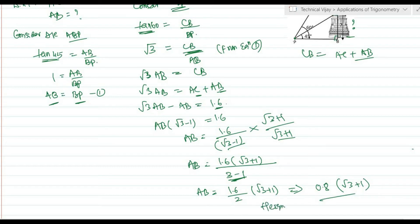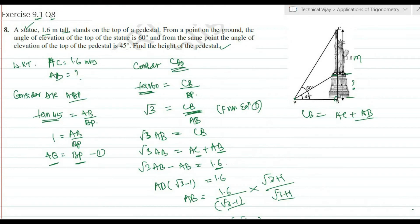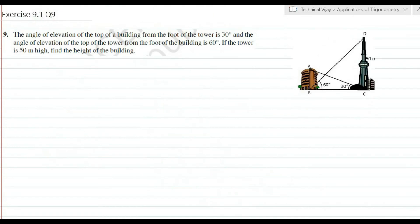Rationalizing by multiplying by (root 3 plus 1) over (root 3 plus 1): AB equals 1.6(root 3 plus 1) divided by (3 minus 1) equals 1.6(root 3 plus 1) divided by 2 equals 0.8(root 3 plus 1). Therefore the height of the pedestal equals 0.8(root 3 plus 1) meters.